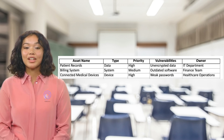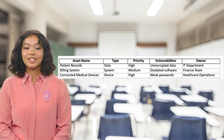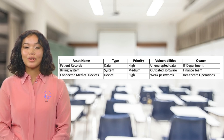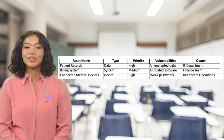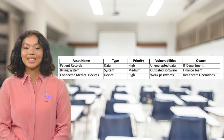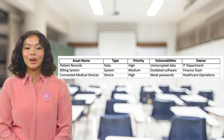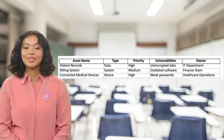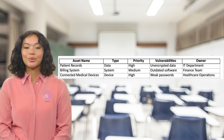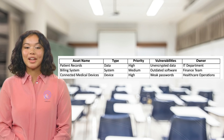First, you need to identify what assets are most important. For a healthcare company, this might include patient records, billing systems, and connected medical devices. Here's an example of an asset inventory template to help you organize this step.